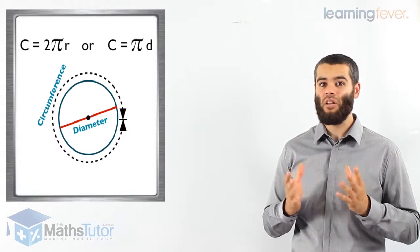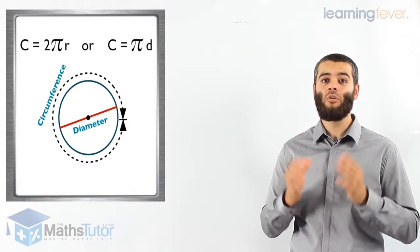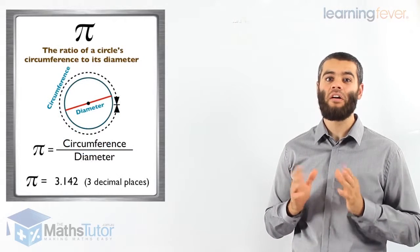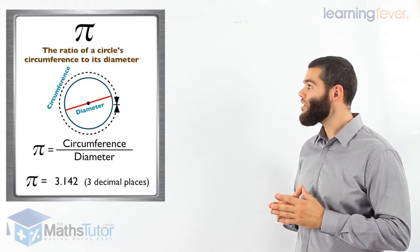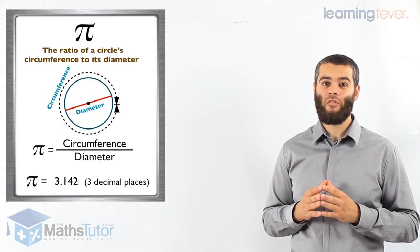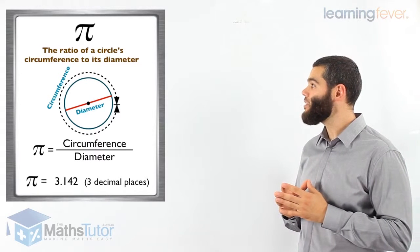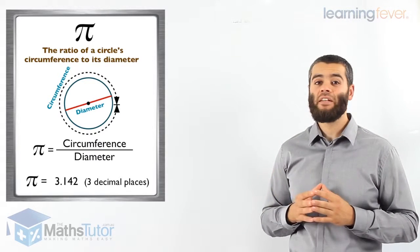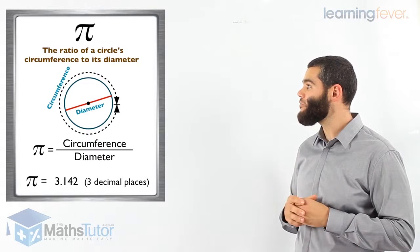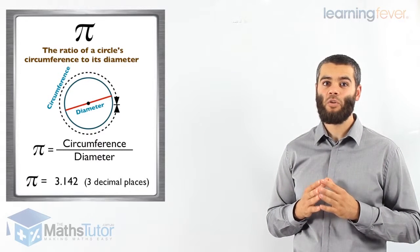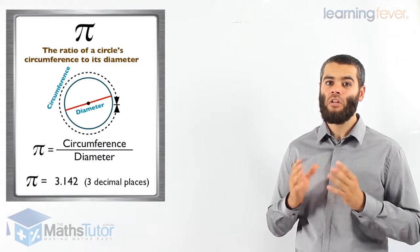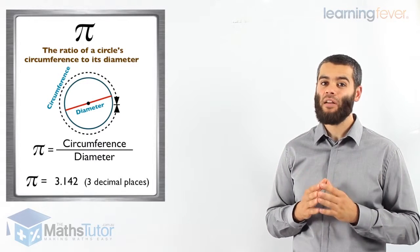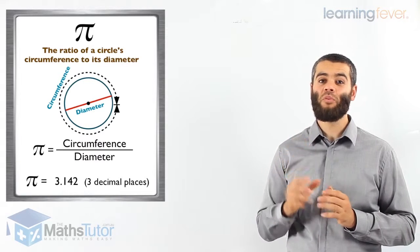Now you may think, what is pi? What's that symbol? Well, pi is basically a symbol. It's actually in the Greek alphabet — the 16th letter — and it is written and pronounced as pi. Pi is basically the ratio of a circle's circumference to its diameter. To work out pi, it's the circumference of the circle divided by the diameter. We're going to use this symbol pi, and it represents 3.142.